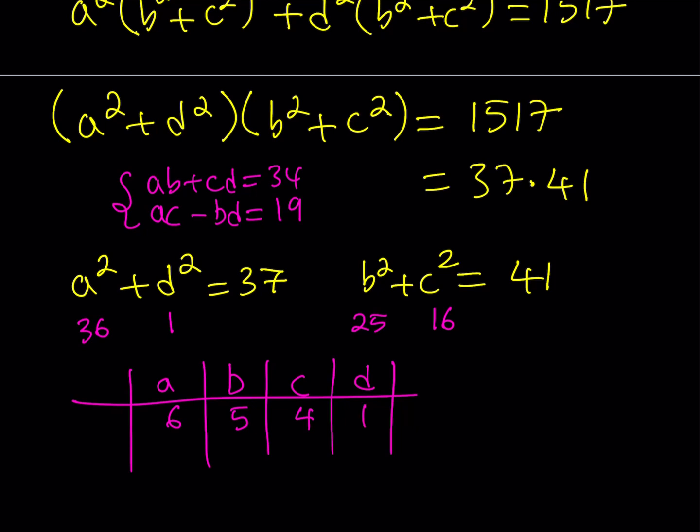What is AB + CD? Well, it's 30 plus 4, and that's 34. So it works.